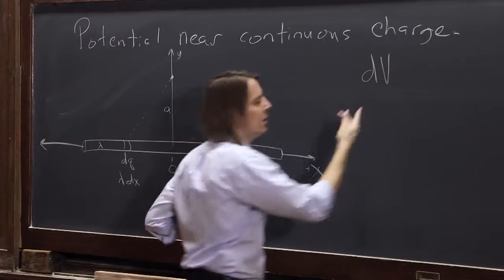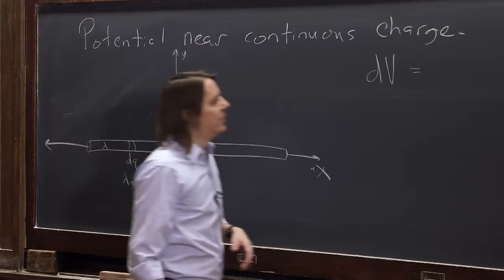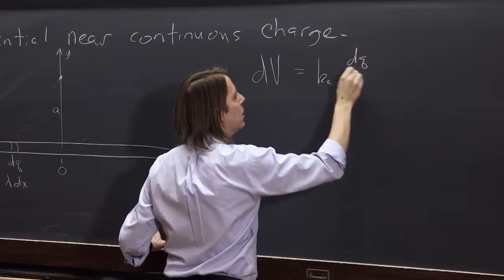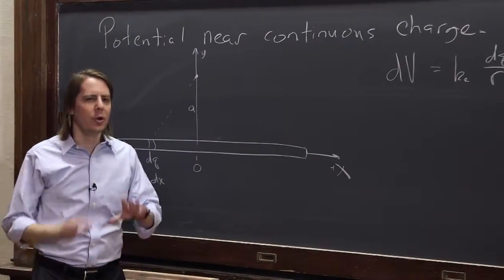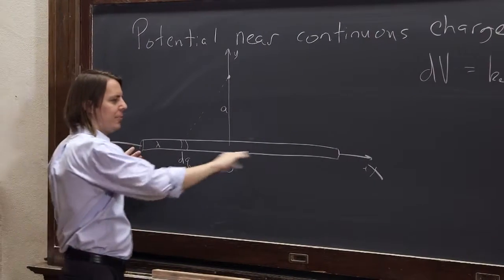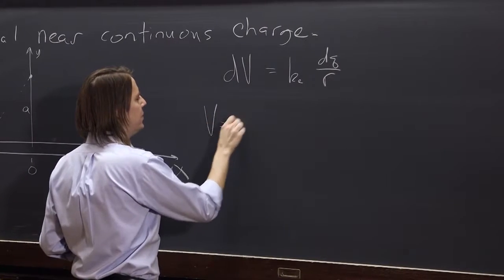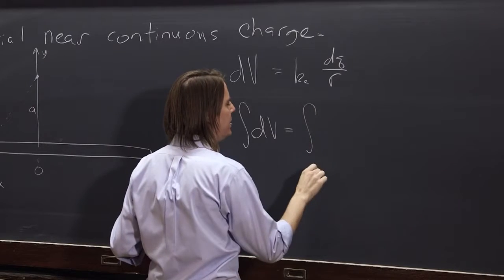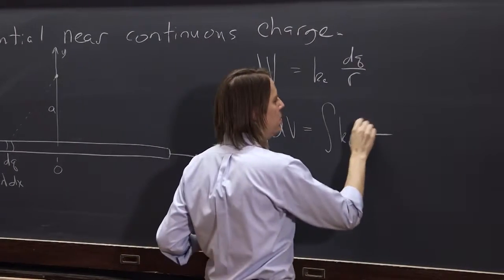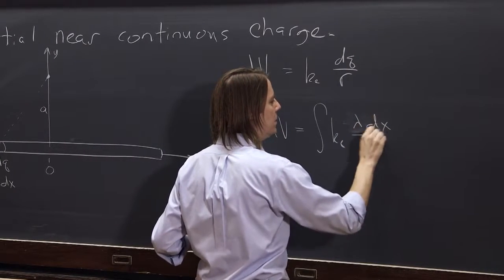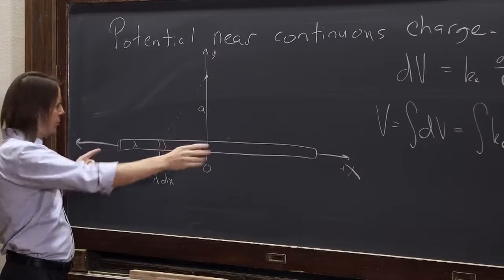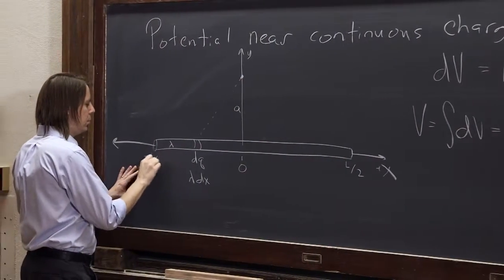The little piece of potential, the differential potential dV, equals ke times dq over r. No vector integral to worry about — this is basically just the potential of a point charge, kq over r. We add that up for all pieces along the rod: the total potential V is the integral of all the dV's. We substitute dq with lambda dx and integrate along the whole rod from minus L over 2 to L over 2.